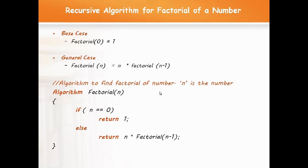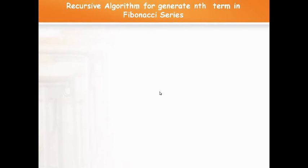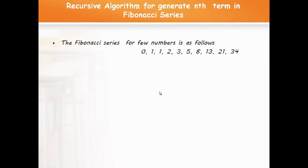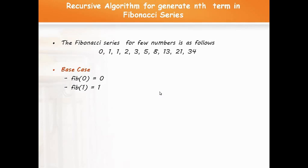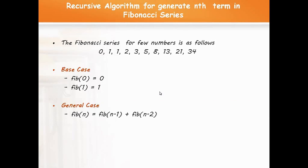Let us see one more example: writing a recursive algorithm to generate the nth term in the Fibonacci series. The Fibonacci series is: 0, 1, 1, 2, 3, 5, 8, and so on. The base cases are: Fibonacci of the 0th term is 0, and Fibonacci of the 1st term is 1. To calculate the nth term, it is the sum of the (n minus 1)th term plus the (n minus 2)th term.